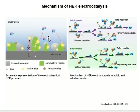A small Tafel slope means that as the overpotential increases, the current density of the hydrogen evolution reaction increases rapidly. Therefore, the hydrogen evolution reaction process involving the Heyrovsky reaction or Tafel reaction as the rate-determining step is advantageous.